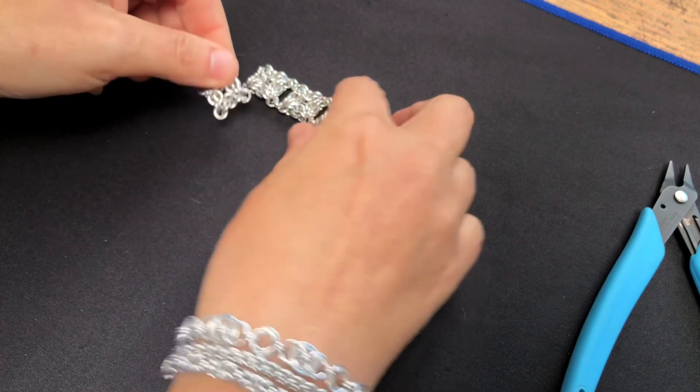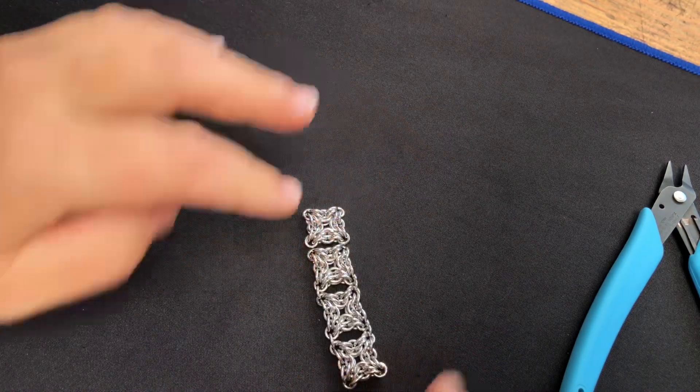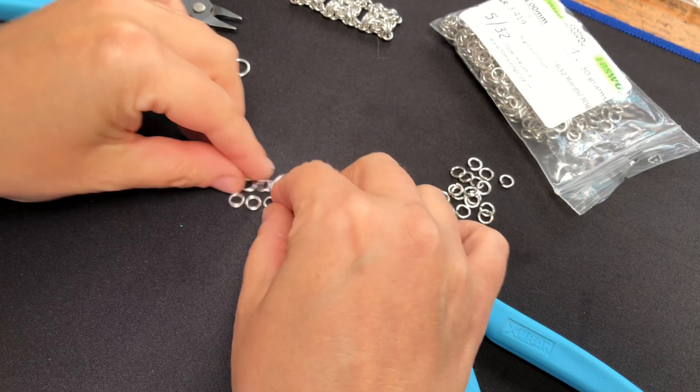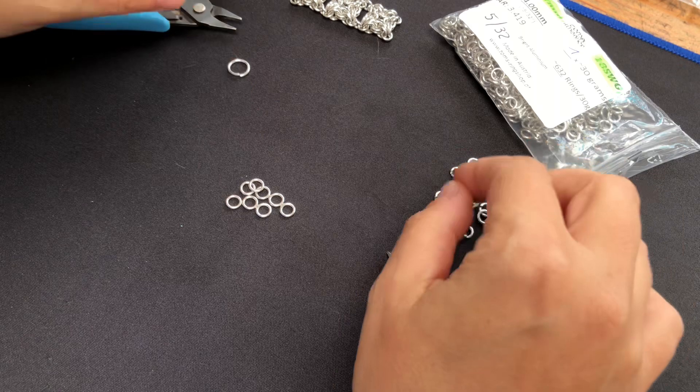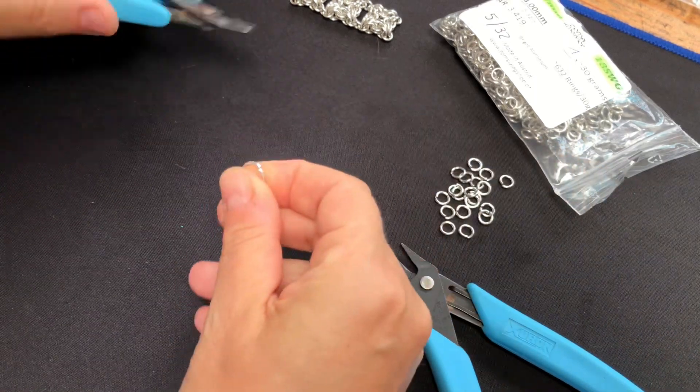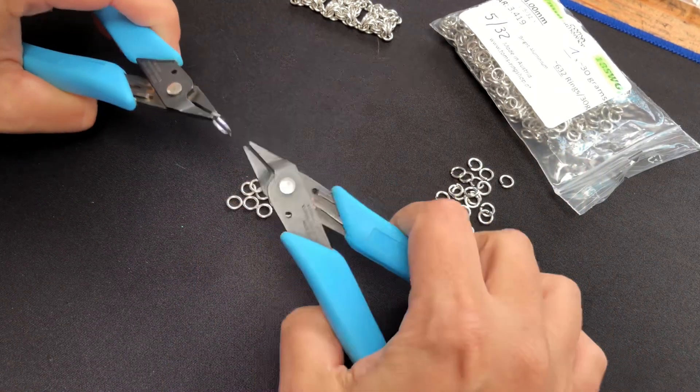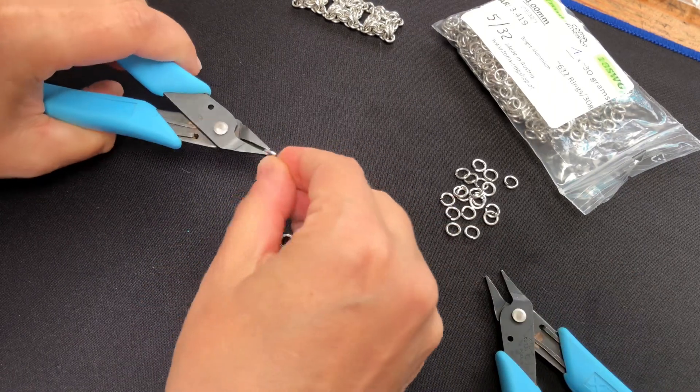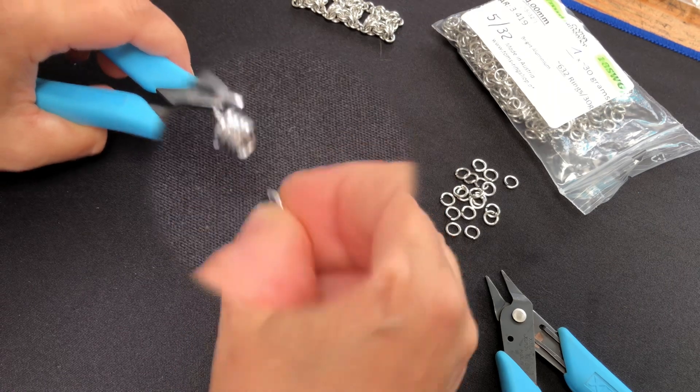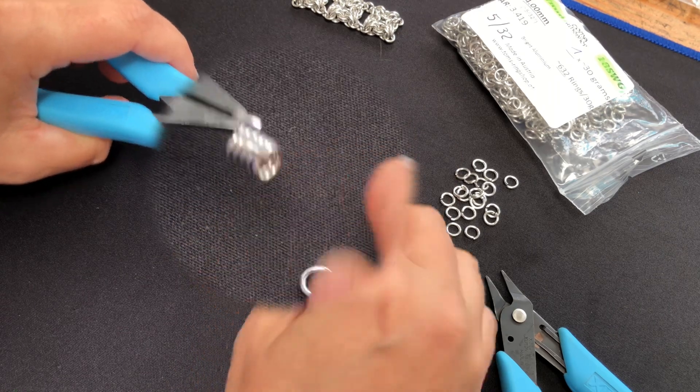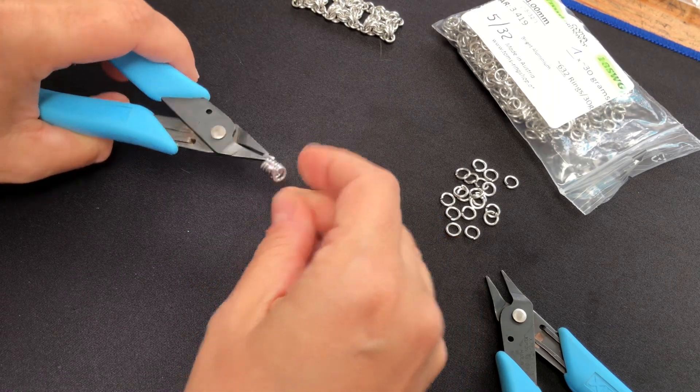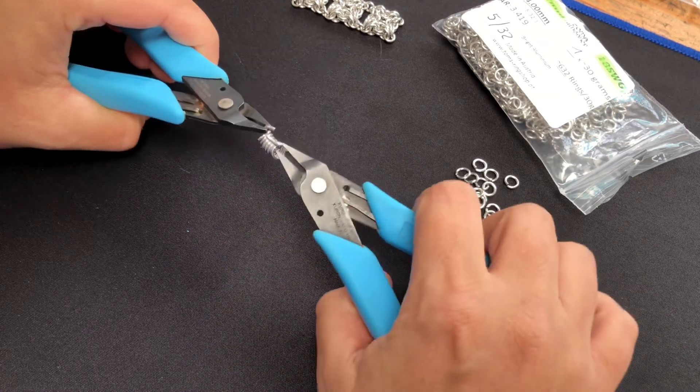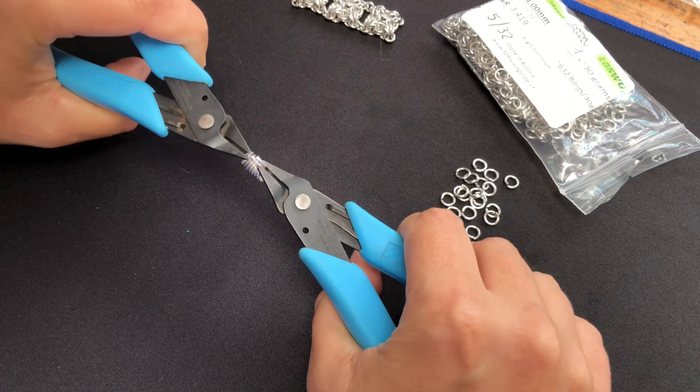So let's get started. What we want to do first is close up eight of the medium rings. Then we're going to take a large ring and we're going to thread all eight of these medium rings. We're going to put them all on that large ring.